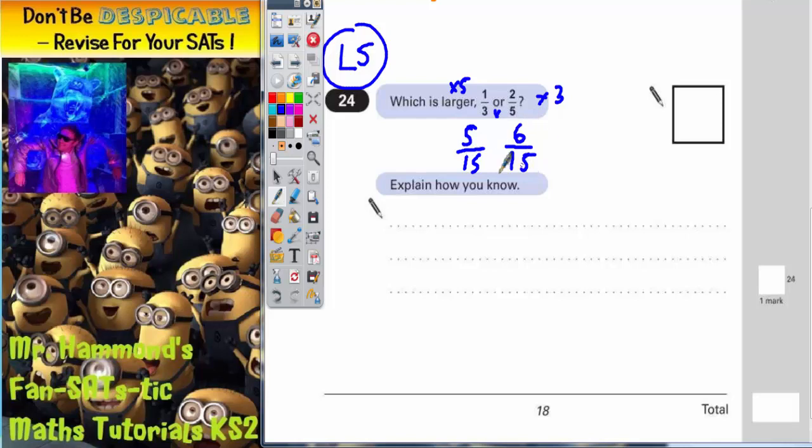Now that they are both in fifteenths, you can easily see which one is bigger. 5/15 or 6/15, well obviously 6/15 is bigger. And that has come from our 2/5 there. So which is larger, 1/3 or 2/5? And the answer is 2/5.